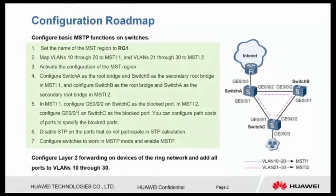Let's move to the configuration roadmap. Configure basic MSTP functions on the switch. Step 1: Set the name of the MST region to RG1. Step 2: Map VLANs 10 through 20 to MSTi1, and VLANs 21 through 30 to MSTi2. Step 3: Activate the configuration of the MST region.